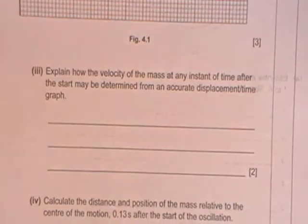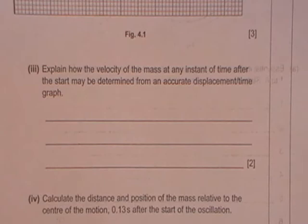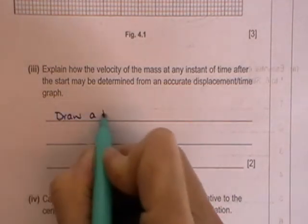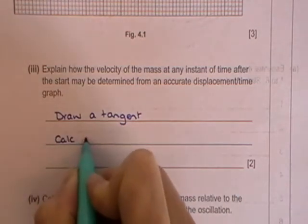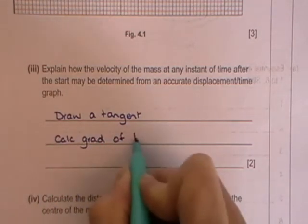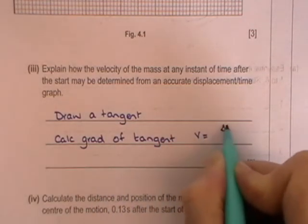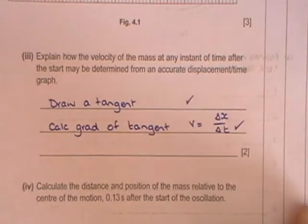Part three, explain how the velocity of the mass at any instant of time after the start may be determined using an accurate displacement time graph. And you can just get the velocity by drawing a tangent and then calculate the gradient of the tangent, because velocity is change in displacement over change in time. And that's how you get your two marks for that.